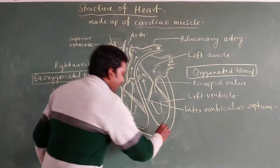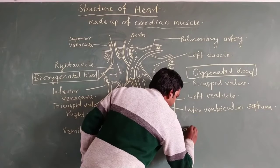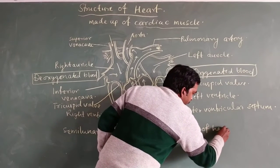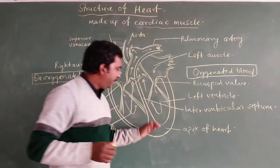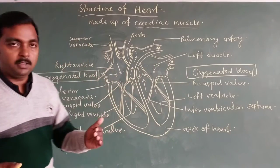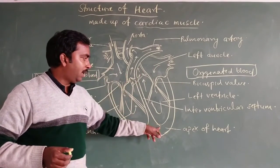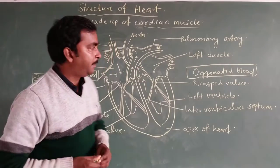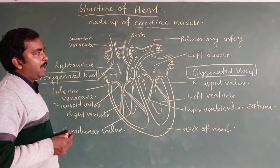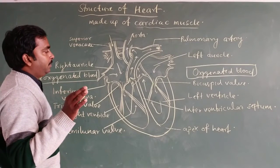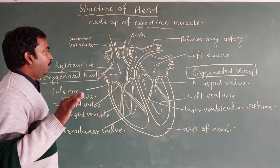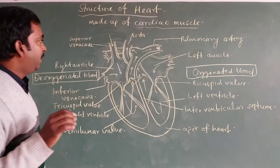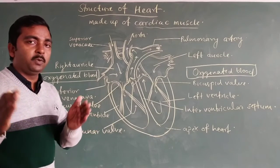This is the apex of the heart. As you can clearly see from the diagram, the apex of the heart is slightly tilted towards the left side, which indicates the position of the heart. Now we are going to explain the direction of blood flow in the heart, or the mechanism of the heart.